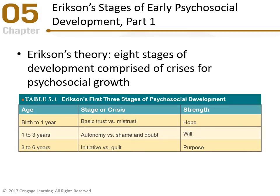Before we delve deeper into trust and attachment, we need to review Erikson's theory. He has eight stages of development comprised of crises for psychological growth. The first three stages pertain to what we're covering now with relationship and social growth. This table is a great study reference — Erikson's first three stages of psychosocial development.